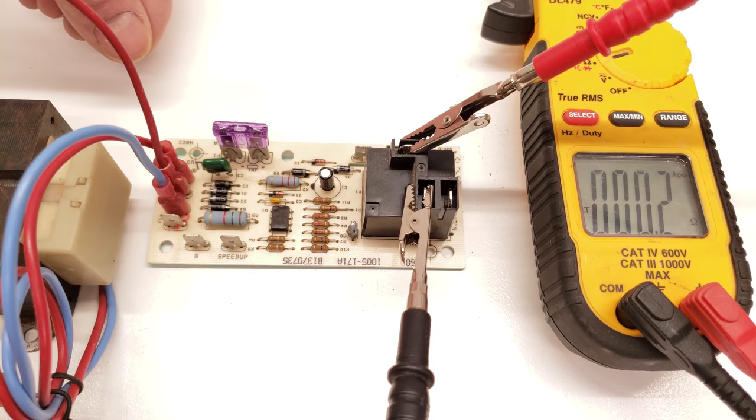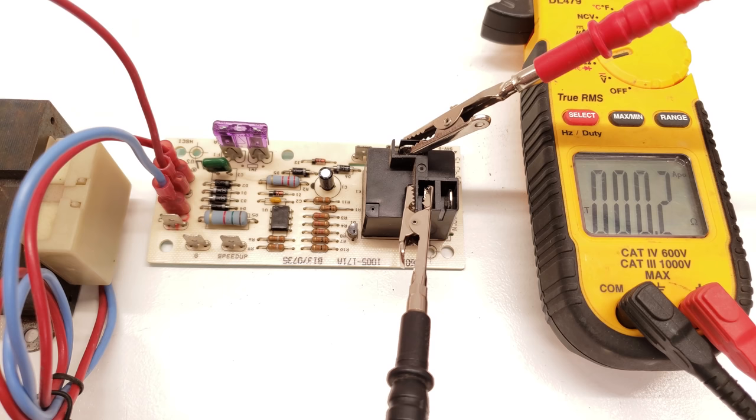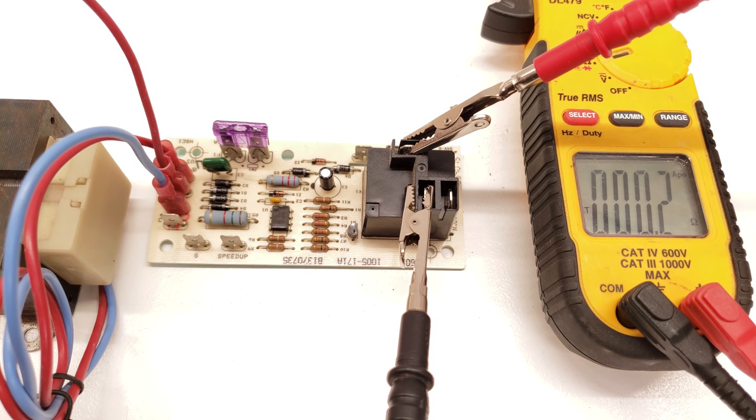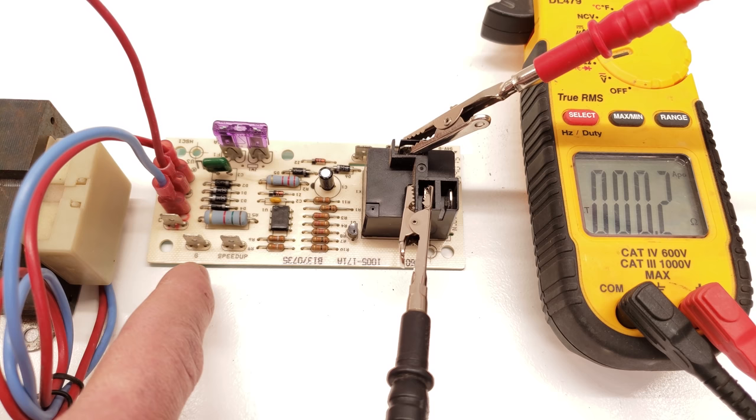The other thing is that anytime you turn air conditioning on, R is going to touch Y and G all at the same time. So Y doesn't necessarily have to be on this board at all for your outdoor unit to turn on and for air conditioning to turn on. Your fan is going to be turned on at its normal fan speed and it's going to be initiated by this right here.